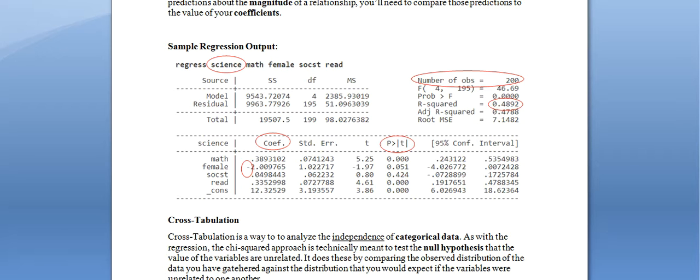Of course, if the variable were coded so that 0 equals female and 1 equals male, the interpretation flips: the value increases from 0 to 1 going from woman to man, and with a negative coefficient, that would indicate women score higher and men score lower. The direction of the relationship depends entirely on how the variable is coded.